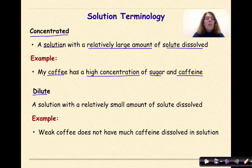Dilute is a solution with a relatively small amount of solute dissolved. In other words, weak coffee does not have much caffeine dissolved in solution, and therefore I say what's the point?